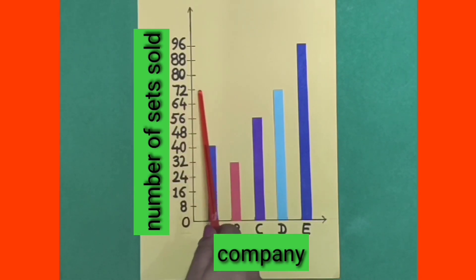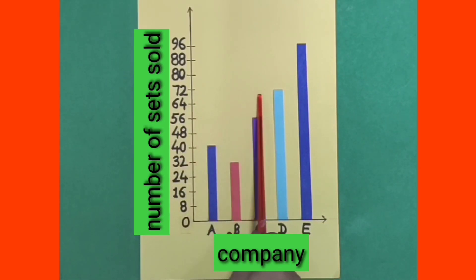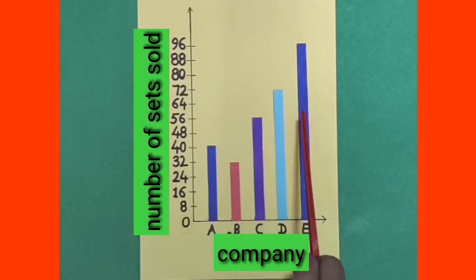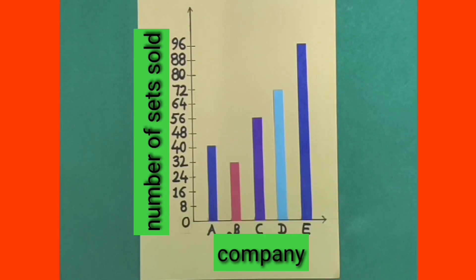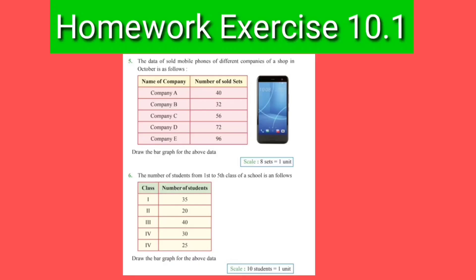Which company sold 72 mobile sets? Yes, company D represents the rectangular bar at the level of 72. So that means company D sold 72 mobile sets.